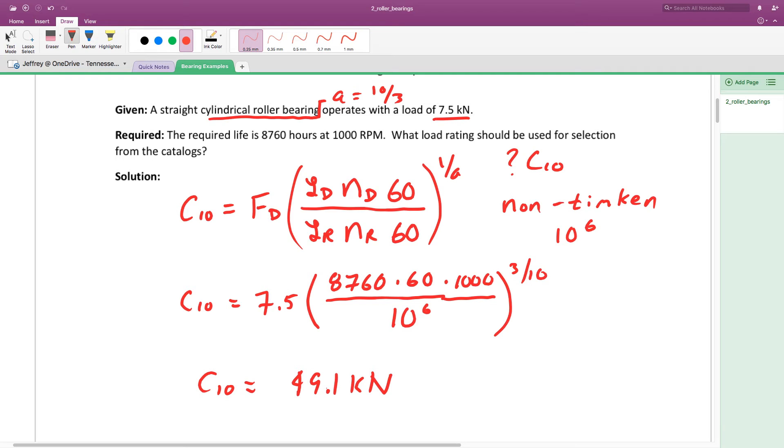Looking at a table for that, we'll find that for an O2 series bearing, it's going to require a 55mm bore. That is just taking that C10 value and going to the table, which is in Shigley's table 11.2—I think it's 11.3 for roller bearings. Find something with a C10 value above that, and that's the bearing you want.